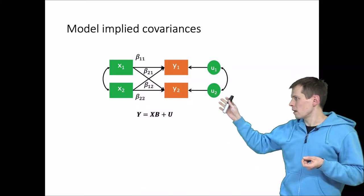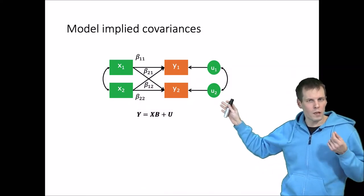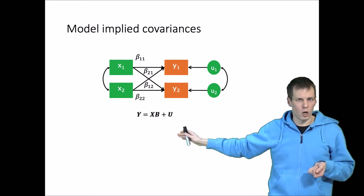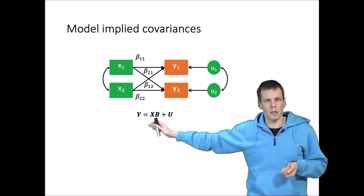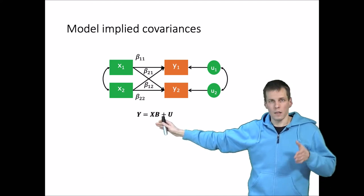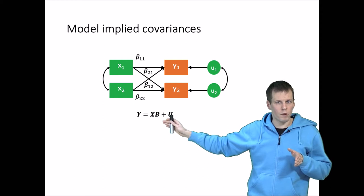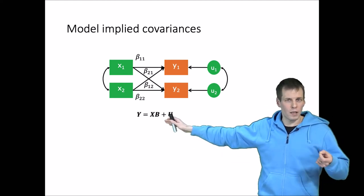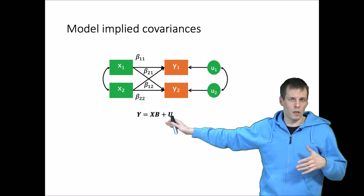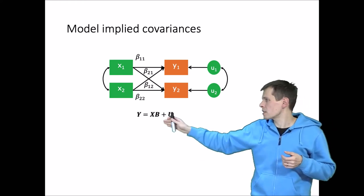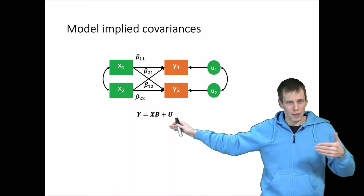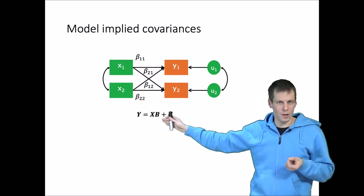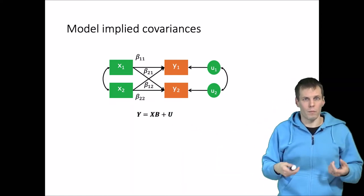Here is an application: a simultaneous equations model with two dependent variables y1 and y2 and two predictors x1 and x2, written in matrix format. Y is the matrix of dependent variable values, X is the matrix of independent variable values, Beta is a matrix of regression coefficients, and U is a matrix of error term values. The product Xβ gives the predicted values — which is why Stata's predict command defaults to the option 'xb' for fitted values.